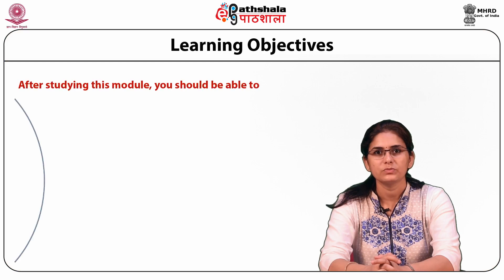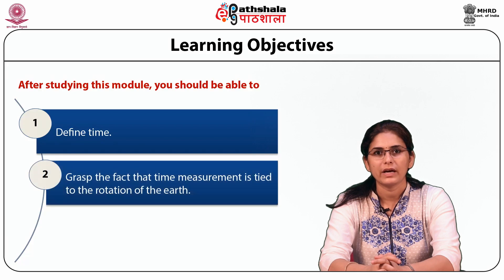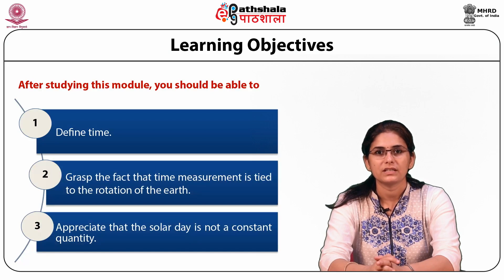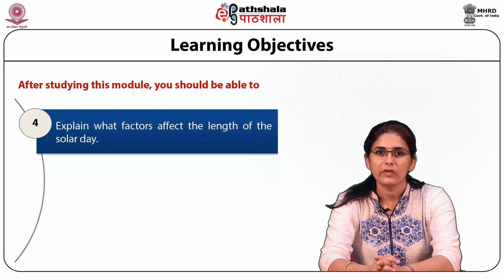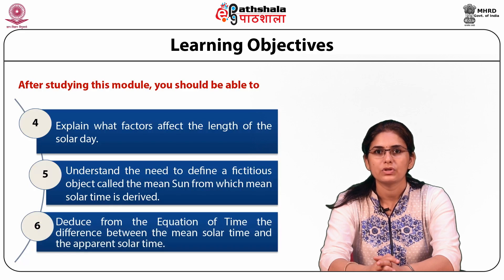After studying this module, you should be able to define time, grasp the fact that time measurement is tied to the rotation of the earth, appreciate that the solar day is not a constant quantity, and explain what factor affects the length of the solar day. You should be able to understand the need to define a fictitious object called the mean sun from which mean solar time is derived, and reduce from the equation of time the difference between the mean solar time and the apparent solar time.